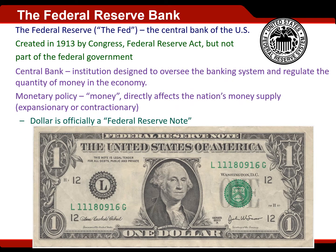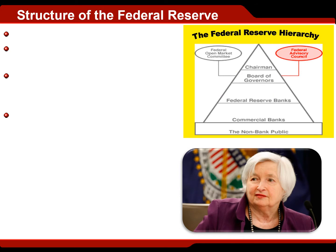That brings us to our next point: a central bank. The United States is not the only country that has one — virtually every major economy in the world has their own central bank. The whole purpose of a central bank is to oversee the banking system and regulate how much money is available in the economy. When a central bank regulates the amount of money in the economy, it's what we officially call monetary policy. Money has a direct effect on a nation's economic growth — more money can expand the economy, less money can actually contract it.